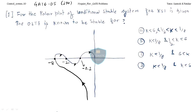Welcome friends. Today we will see GATE problems. This is a 5-marks problem for the polar plot of an unconditionally stable system. For k equal to 1, the plot is already given. The open loop transfer function is known to be stable, and k values are given. We have to find out the k value for system stability.